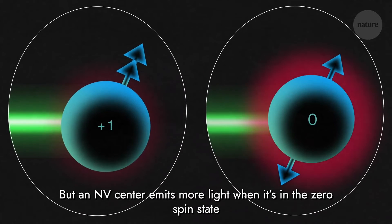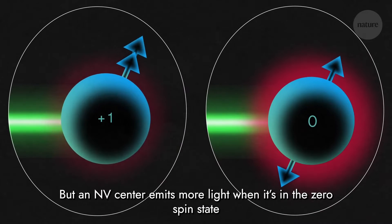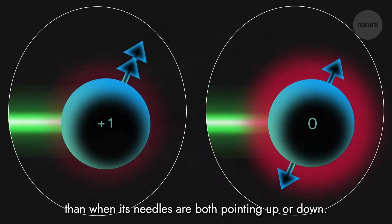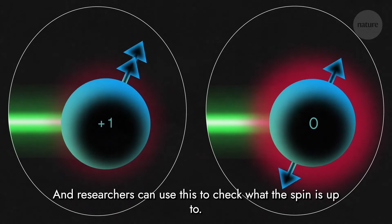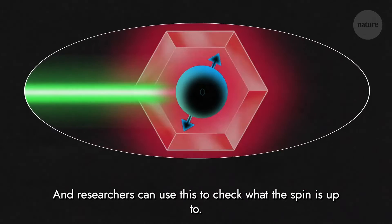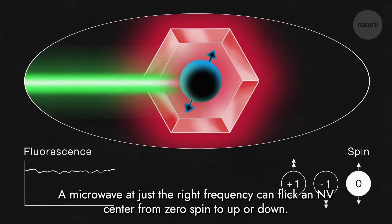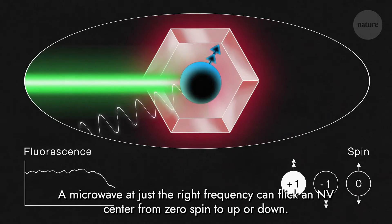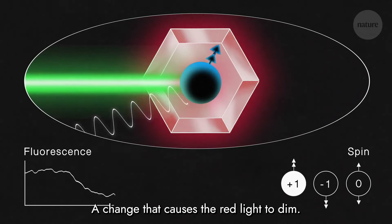But an NV centre emits more light when it's in the zero spin state than when its needles are both pointing up or down. And researchers can use this to check what the spin is up to. A microwave at just the right frequency can flick an NV centre from zero spin to up or down, a change that causes the red light to dim.